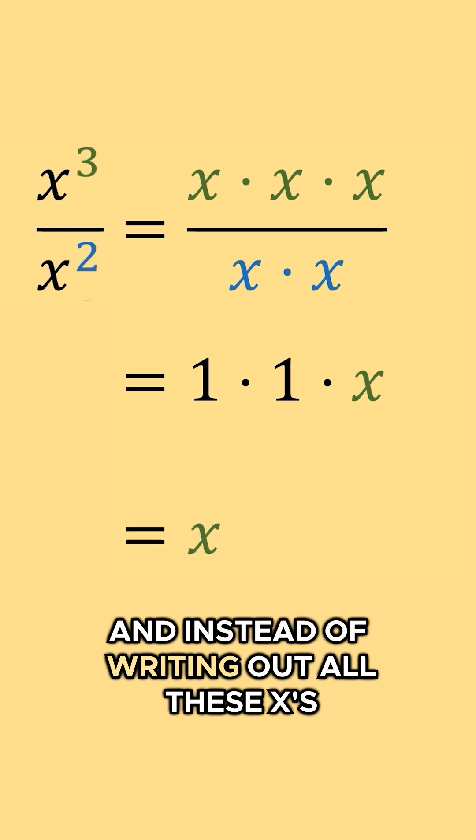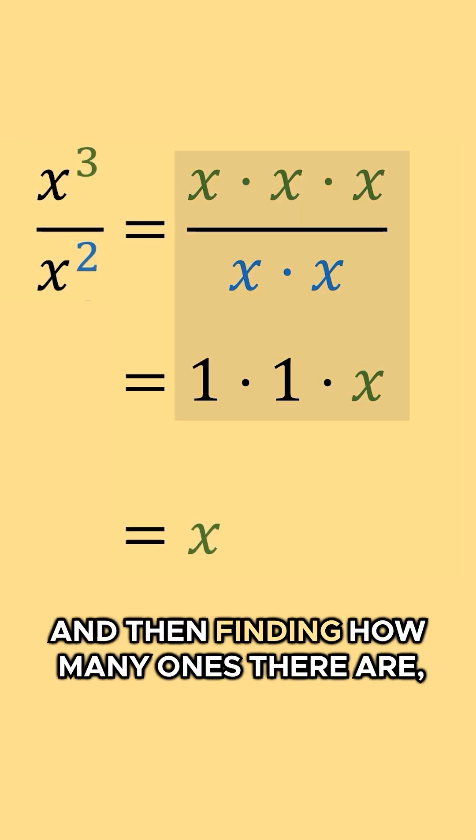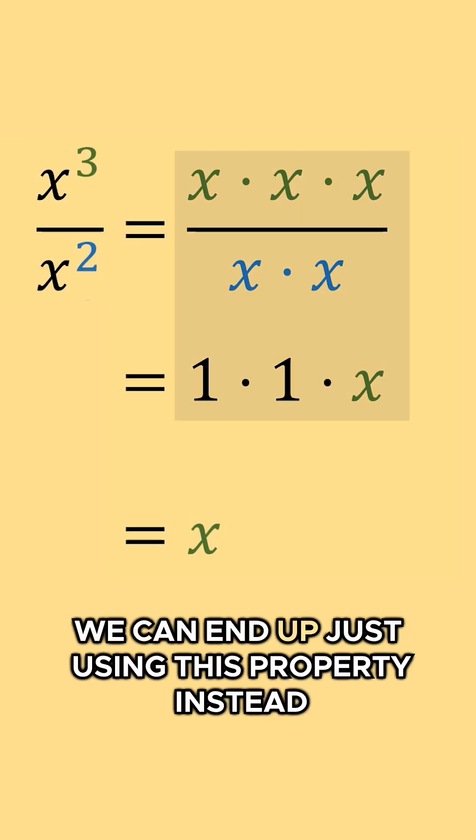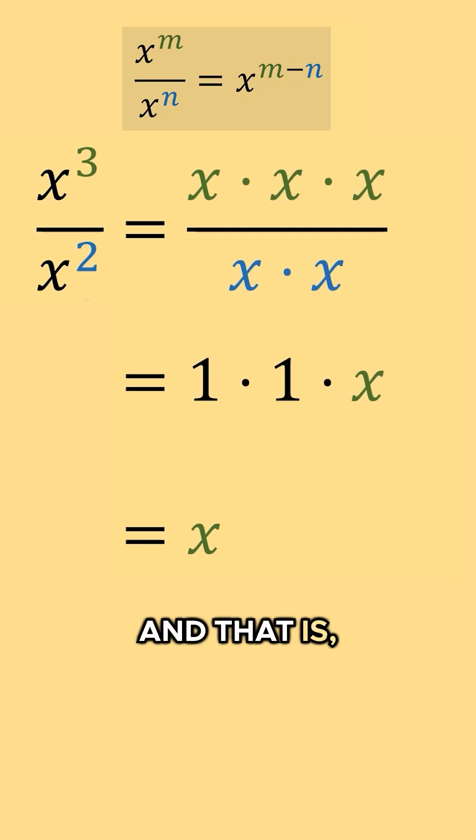And instead of writing out all these x's and then finding how many ones there are, we can end up just using this property instead as a shortcut. That is,